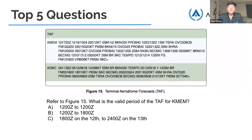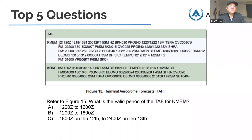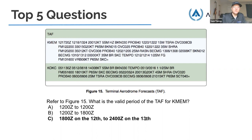Question 8: What is the valid period of the TAF for Memphis? Looking at the Memphis TAF, it's the 12th day at 1720 Zulu. The forecast period is from the 12th day at 18 Zulu to the 13th day at 24 Zulu. The answer is C.